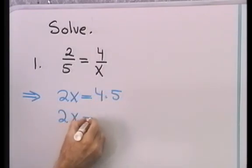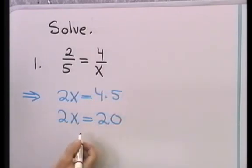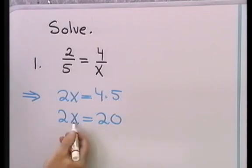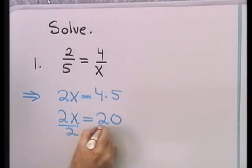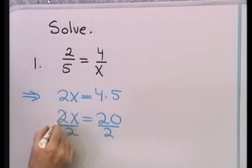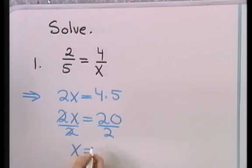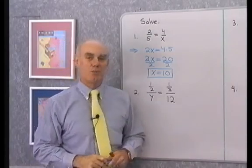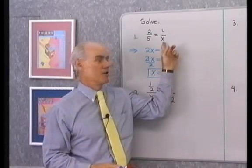So, 2x is equal to 20. I want to solve this for x. I think you can see that x is equal to 10, but let me show the work where I divide both sides by 2. So, those factors of 2 divide out, and I have x is equal to 20 divided by 2, which is 10. A very simple process in solving a proportion like this that's missing one of its terms.